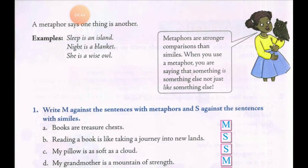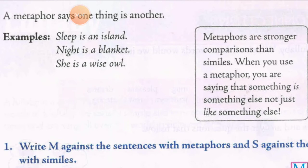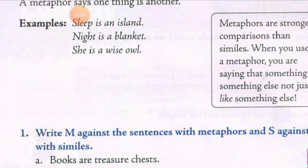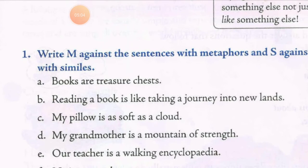Now below there is some exercise we have to do. Write M against the sentences with metaphors and S against the sentences with similes. We have to read them one by one, think, and mention M or S in the box. Jahaan metaphor hai us box mein M likhna hai, aur jahaan simile hai us box mein S likhna hai.